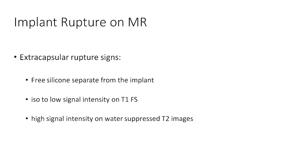Let's talk more about extracapsular rupture signs on MRI. We can see free silicone separate from the implant. We can see iso to low signal intensity on the T1 fat sat images outside of the capsules. We see high intensity on water suppressed T2 images outside of the capsules as well.